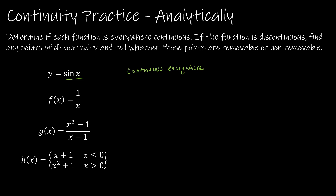For our second one, we have f of x equals 1 over x. This is called a rational function — rational from ratio, meaning that there's a fraction involved. When I have a rational function, I'm always concerned about the denominator; I don't want it to equal 0. So in this case, I can see that this is going to be discontinuous at x equals 0, because if x were equal to 0 then I would have 1 divided by 0, and mathematically that means it's undefined.